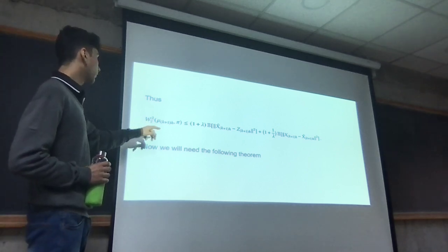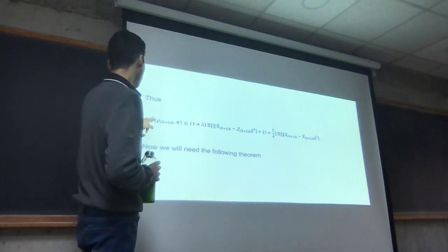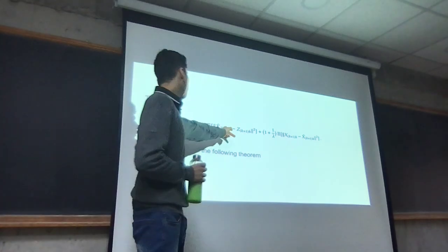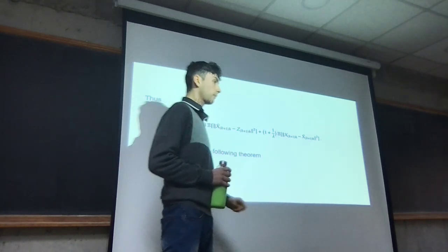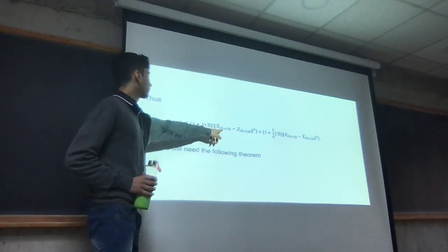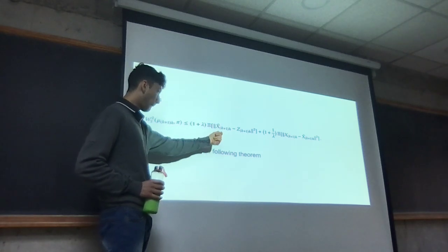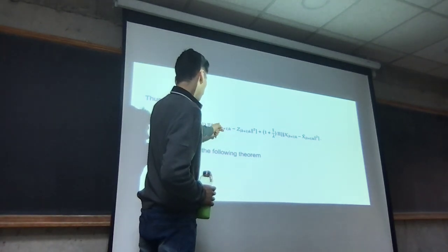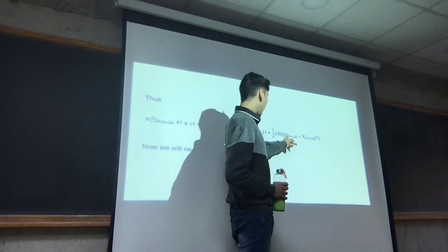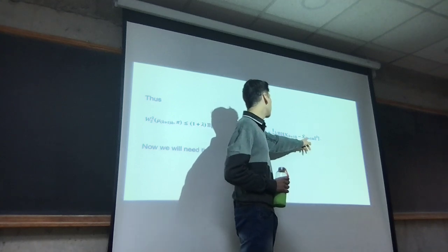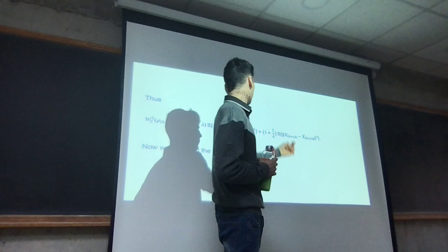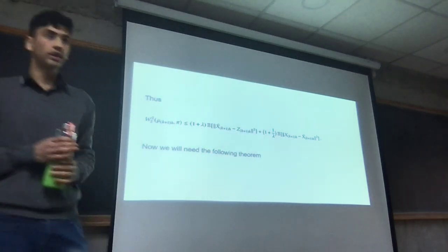Adding things up, the squared Wasserstein distance between mu_{k+1,h} and pi equals (1 + lambda) times one term plus (1 + 1/lambda) times the other. To estimate the second term, we use a theorem: when we have two Langevin diffusions driven by the same Brownian motion, one started at x_{k,h} and the other as the continuous diffusion. The first bound from the one-step analysis applies to the algorithm versus continuous diffusion term, while the contraction theorem handles the two Langevin diffusion term.